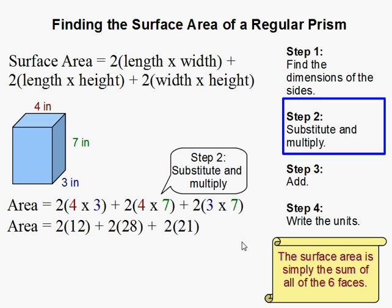I hope I didn't confuse you there. So now I have the 4 times 3 is 12. 4 times 7 is 28. 3 times 7 is 21.